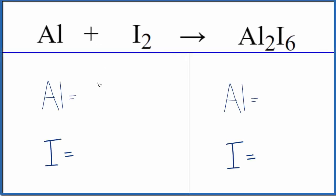Let's write the balanced equation and look at the type of reaction for Al plus I2. This is aluminum plus iodine gas.